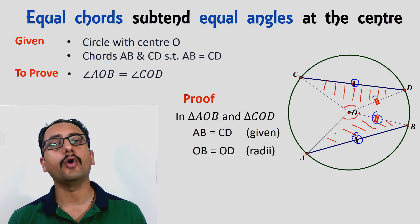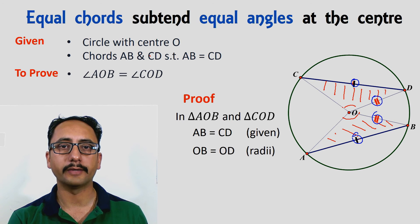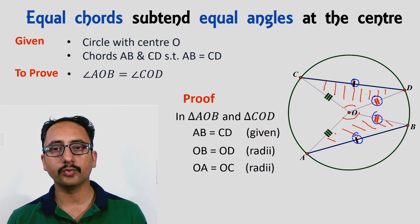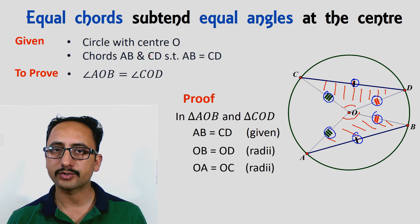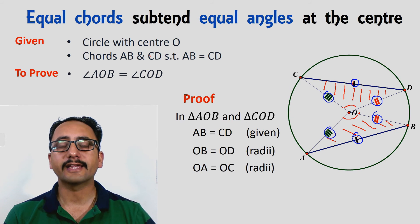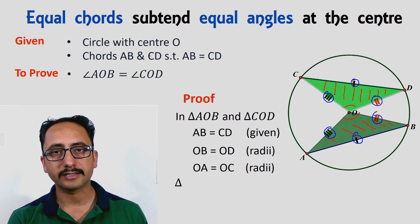And the last one, OA equals to OC, again radii of the circle. Now we have proved that the three sides of the first triangle are equal to the corresponding sides of the second triangle. We can always say that the triangles are congruent.